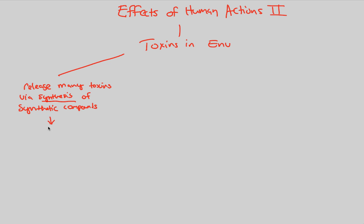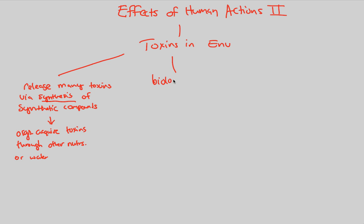So what's going to happen is that these toxins are being released to the environment, and they're going to be acquired by some organisms — and this is not good. Organisms acquire toxins usually through other nutrients that end up absorbing those toxins, or through water that ends up taking in those toxins as well. These environmental toxins that result from us synthesizing things lead to a consequence known as biological magnification.